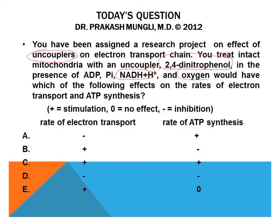The electron transport chain runs at a higher rate and consumes more oxygen in the presence of an uncoupler. Because the uncoupler opens a pore in the inner mitochondrial membrane, decreasing the gradient, the ETC runs faster to try to rebuild the gradient — oxidizing NADH and FADH₂ to their oxidized forms and consuming more oxygen. This results in an increase in respiratory rate.